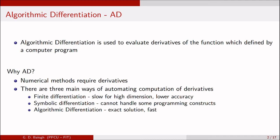The first is finite differentiation, which is slower, especially for high dimensions, and has lower accuracy. We can get exact derivatives with symbolic differentiation, however it cannot handle some programming constructs like unbounded loops.